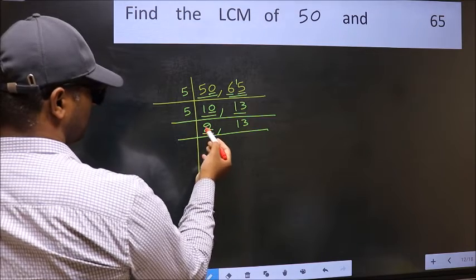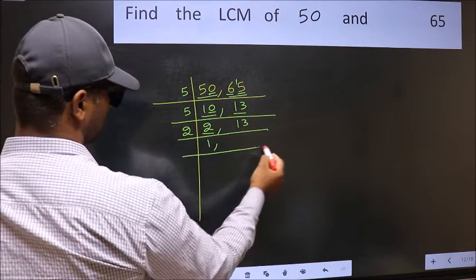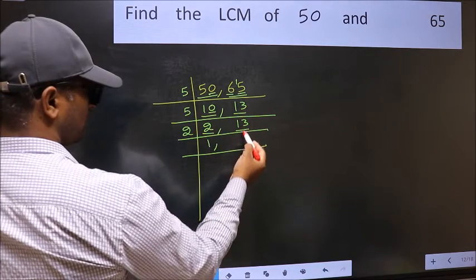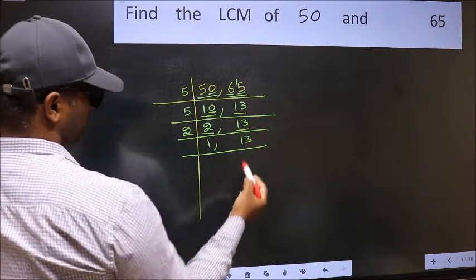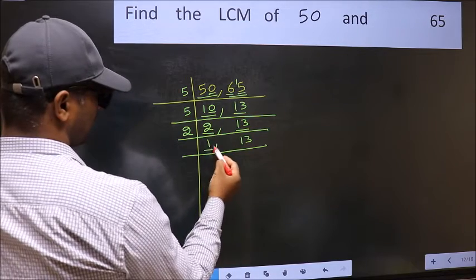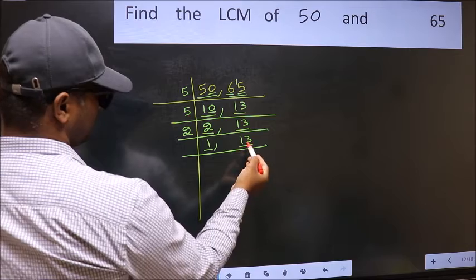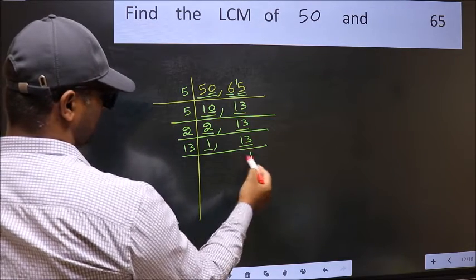Now here we have 2. Since 2 is a prime number, 2 divided by 2 is 1. The other number, 13, is not divisible by 2, so write it as it is. Now we got 1 here, so focus on the next number, 13. Since 13 is a prime number, 13 divided by 13 is 1.